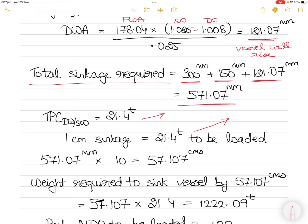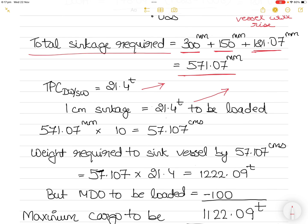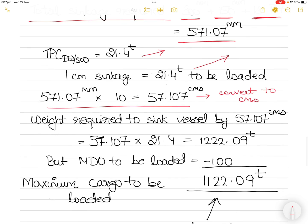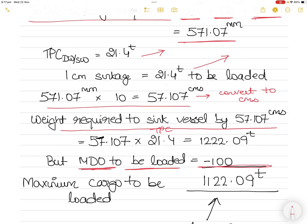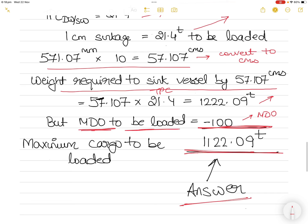The TPC is 21.4 tons per centimeter. Converting 571.07 mm to centimeters: 571.07 / 10 = 57.107 cm. Weight required to sink the vessel by 57.107 cm = 57.107 × 21.4 = 1,222.09 tons. However, this is not the final answer — 100 tons of diesel oil must also be loaded. So maximum cargo weight = 1,222.09 − 100 = 1,122.09 tons. This is the final answer.